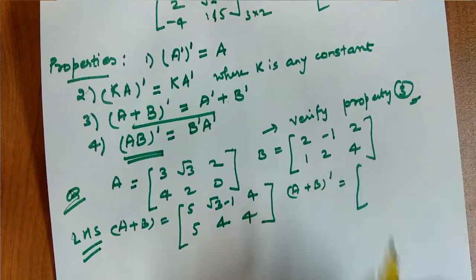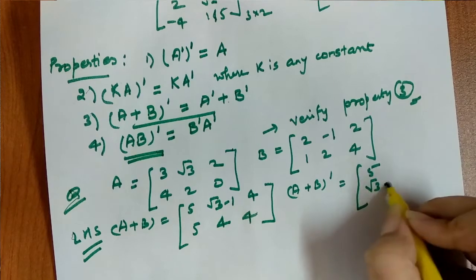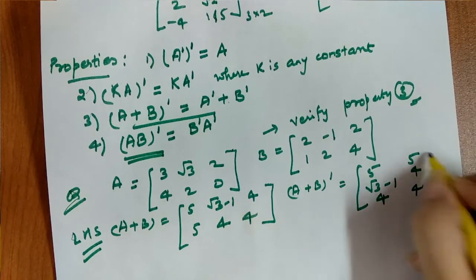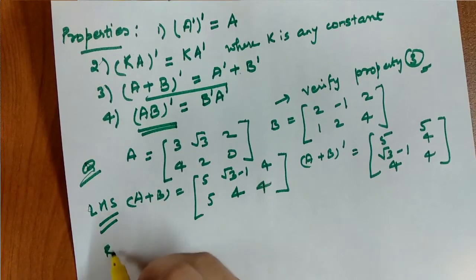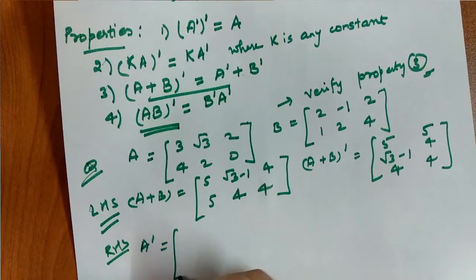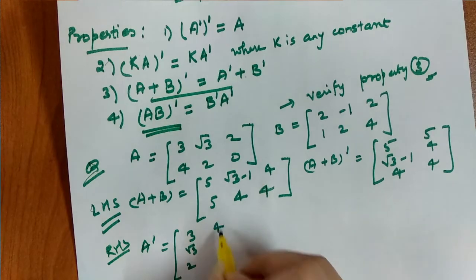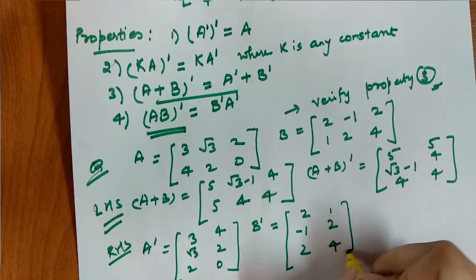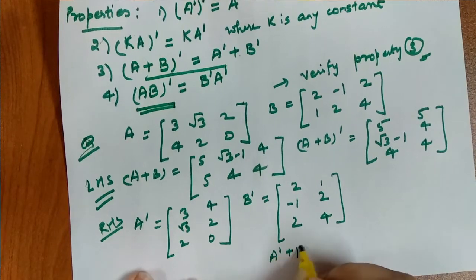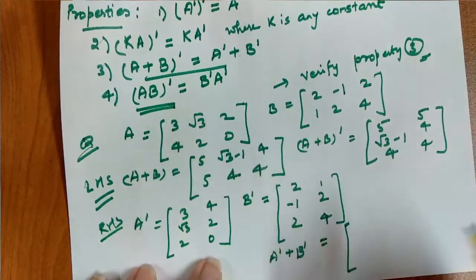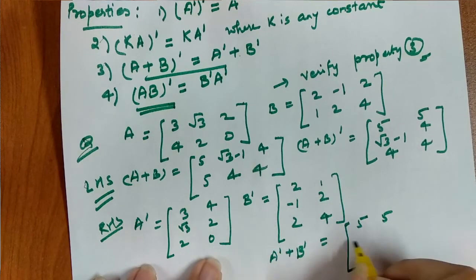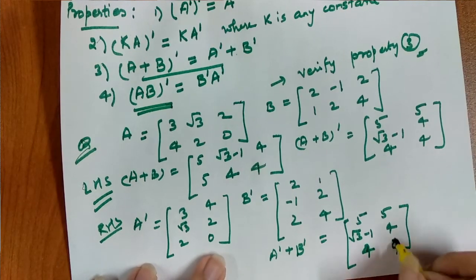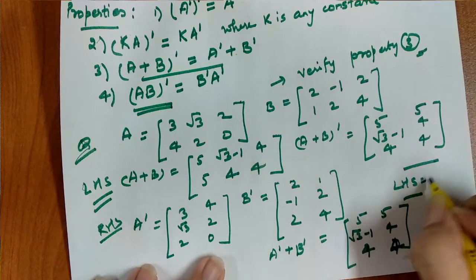For the LHS, (A + B)^T: after adding A and B we get a matrix, and interchanging rows and columns gives us [5, 4, 4; root 3, -1, 4]. For the RHS, we compute A^T and B^T separately, then add them. A^T gives [3, 4, 2; root 3, 2, 0] and B^T gives [2, 1, 2; -1, 2, 4]. Adding A^T plus B^T gives [5, 4, 4; root 3, -1, 4]. LHS equals RHS, so property 3 is proved.